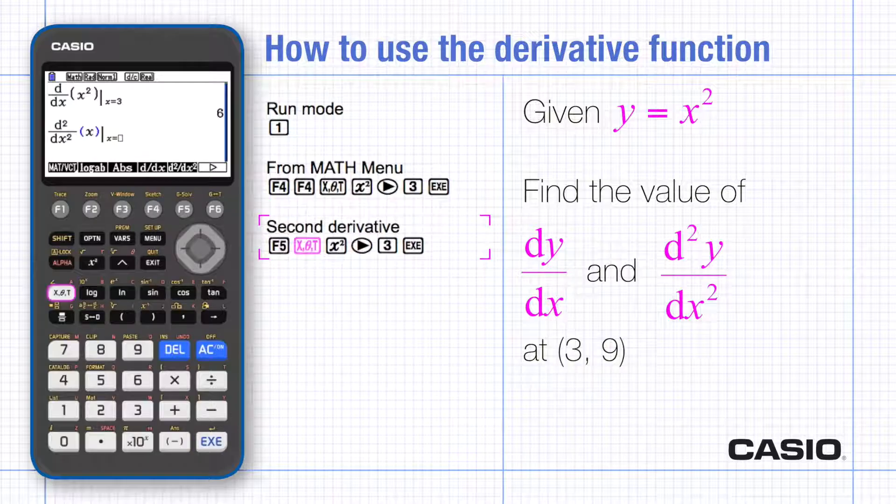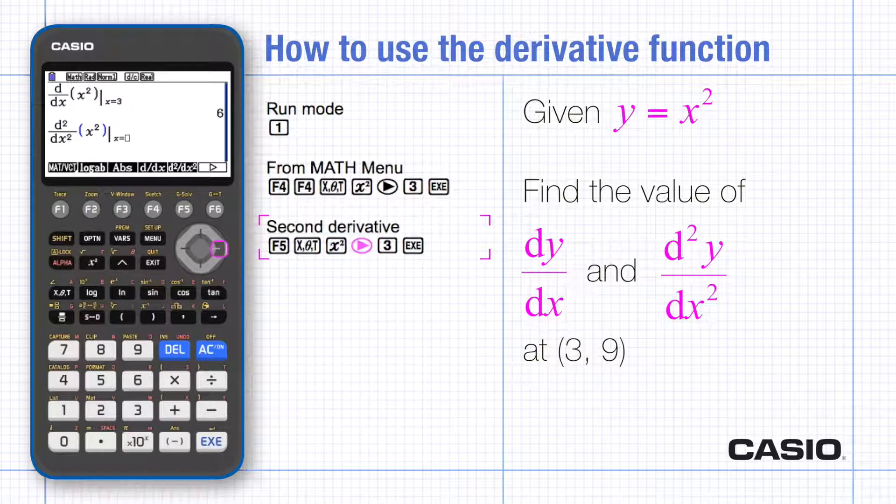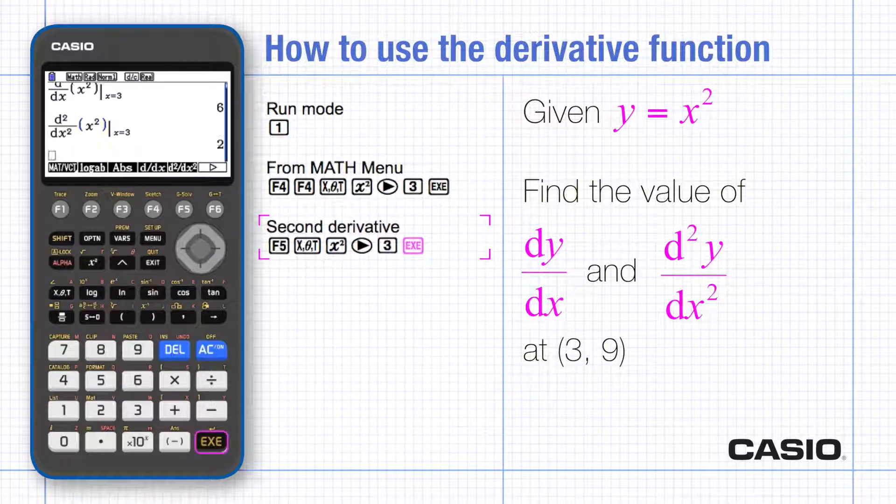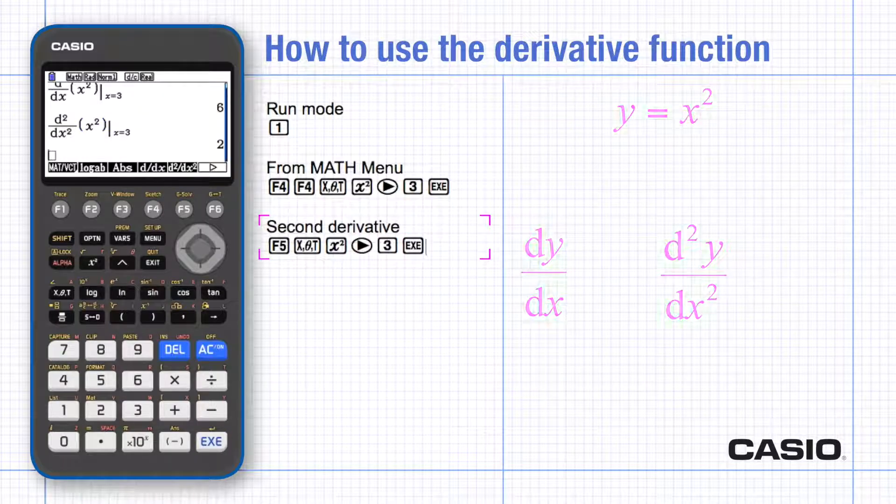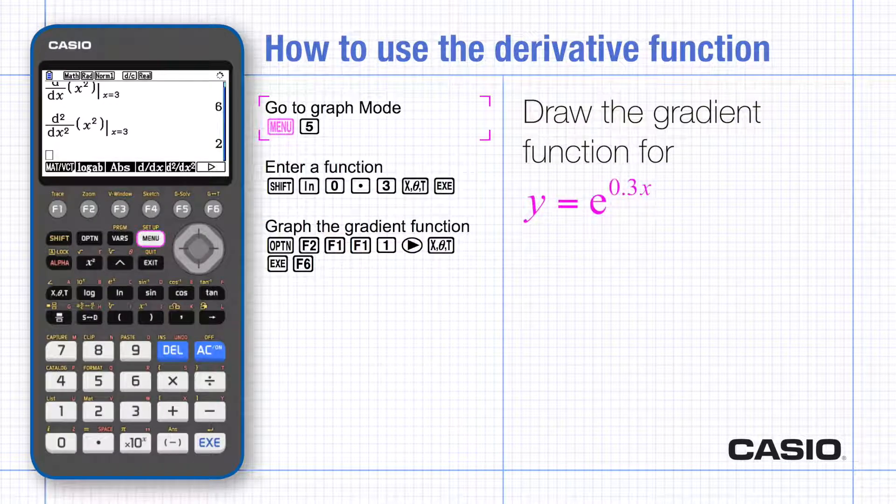Repeat for the second derivative. You can also graph the gradient of a curve at each point as a gradient function. From the main menu go to graph mode.